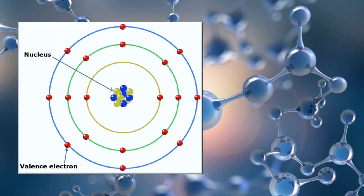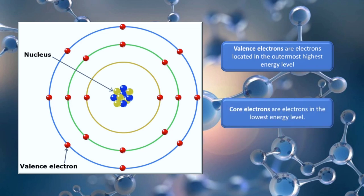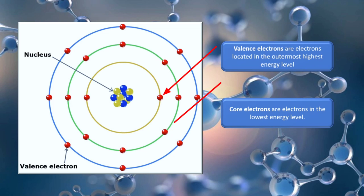Electrons can be divided into valence electrons and core electrons. When we say valence electrons, these are the electrons located in the outermost or highest energy level. While when we say core electrons, they are located at the lowest energy level.